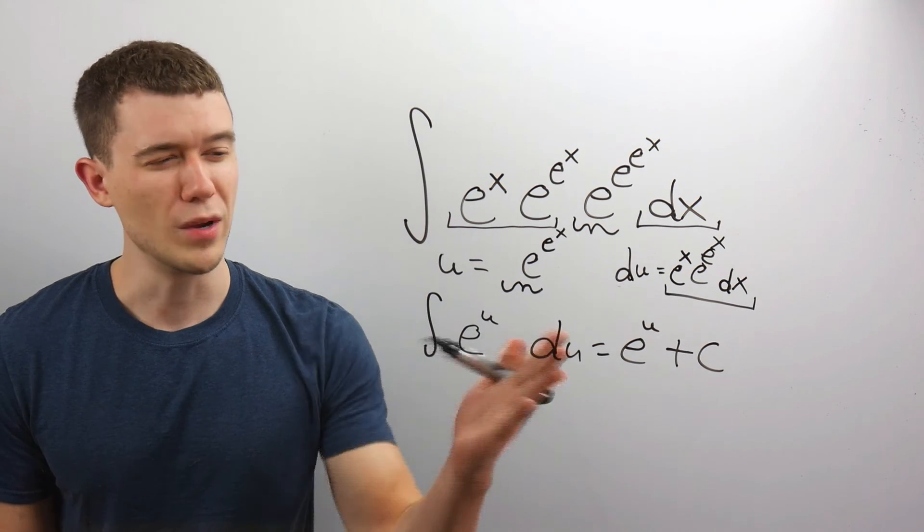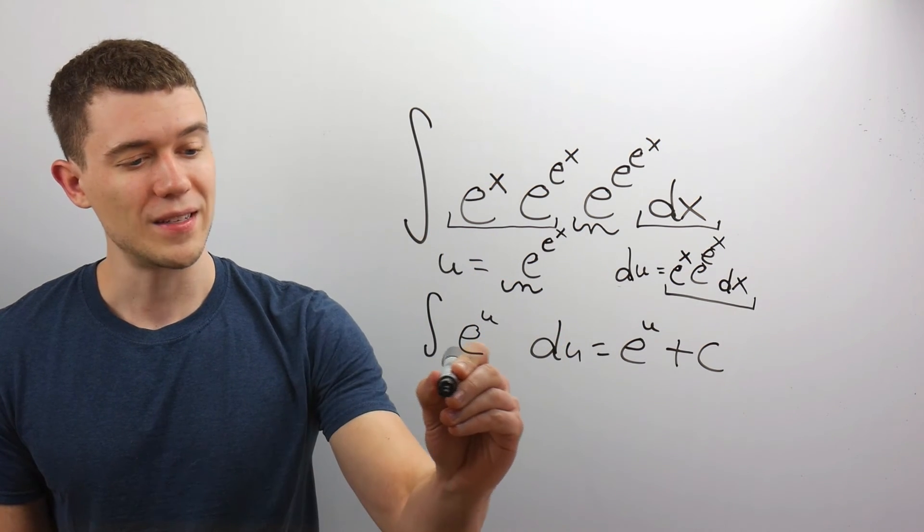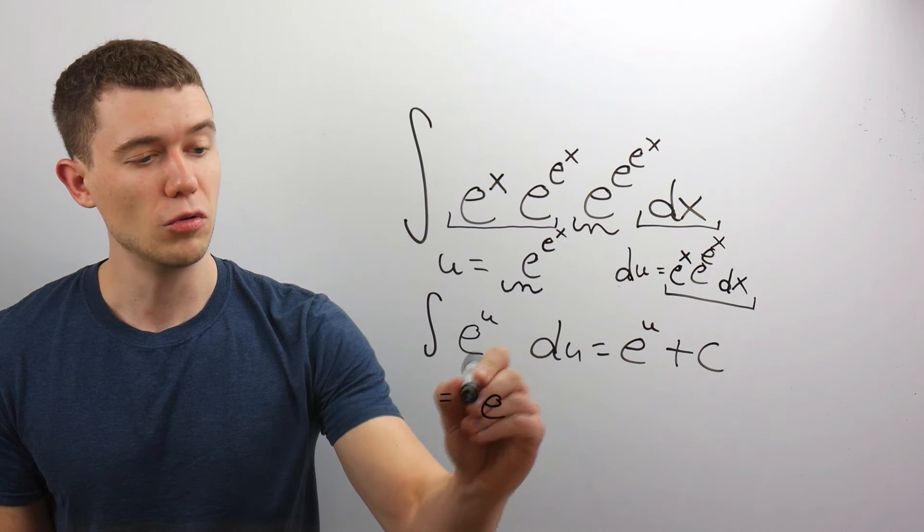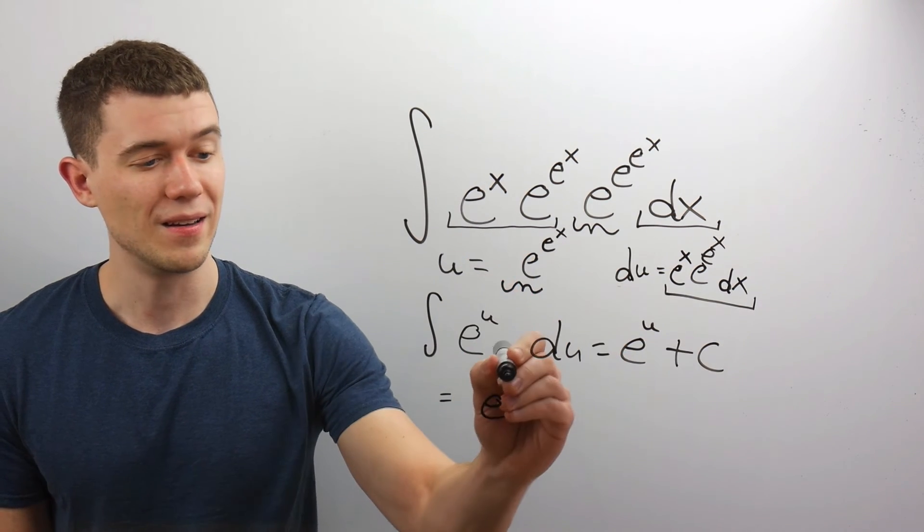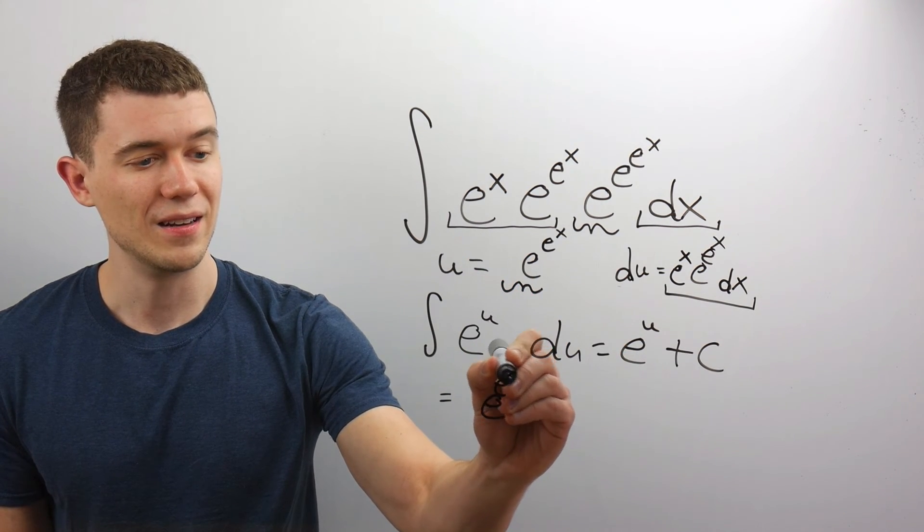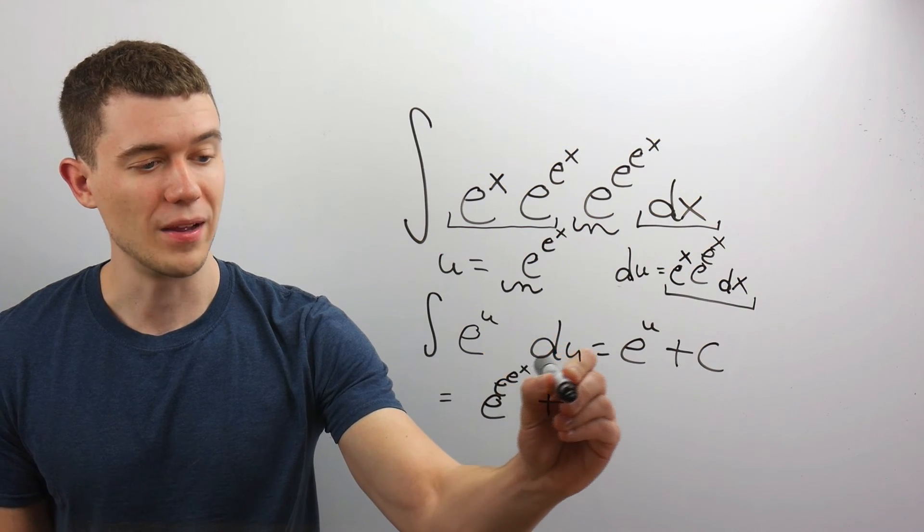Now we started with x's, so we want to end with x's. I'll just replace this u with what I know u to be: e^(e^x) + C.